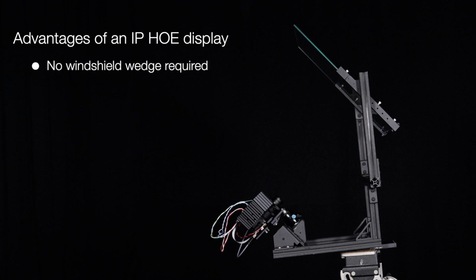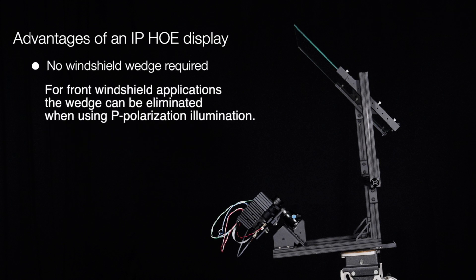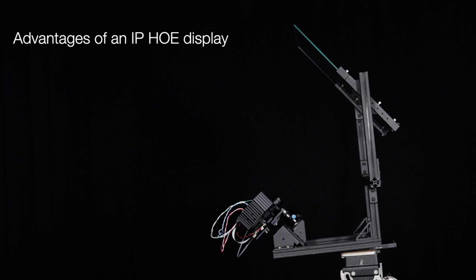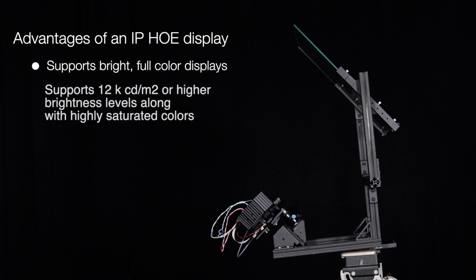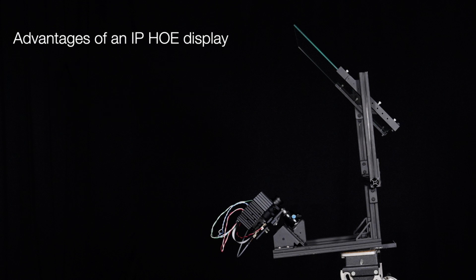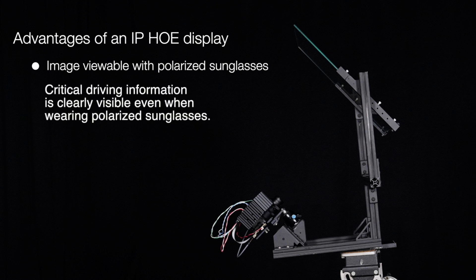No windshield wedge required. For front windshield applications, the wedge can be eliminated when using P-polarization illumination. Supports bright, full-color displays — supporting 12,000 candela per meter squared or higher brightness levels along with highly saturated colors. Image viewable with polarized sunglasses: critical driving information is clearly visible even when wearing polarized sunglasses.